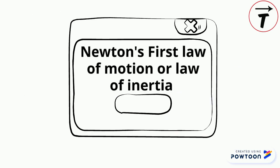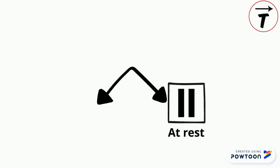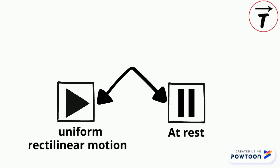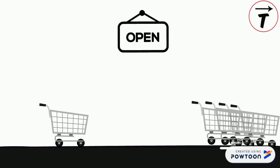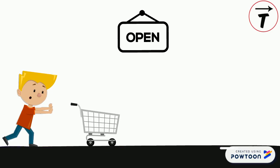Newton's first law of motion, or law of inertia, states that an object continues in a state of rest or in a uniform rectilinear motion unless a net force acts on it. Mathematically, it is expressed as the sum of forces equal to zero. Consider the cart that rests on the floor. No forces act on the cart along the horizontal line, so it doesn't move horizontally. On the vertical line, the weight of the cart and the normal reaction of support balance each other, and the cart stays at rest.